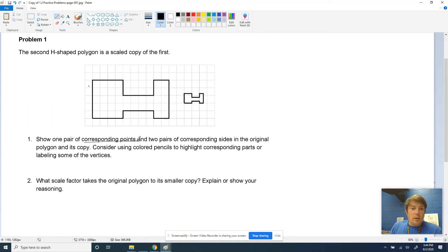We've talked about corresponding points. We've talked about corresponding sides, which are parts, sides, points. We could also talk about angles. But the first thing that it wants us to do is to show a pair of corresponding points. Now, it says you could use colored pencils if you want. Highlight, that's fine. I'm just going to pick a couple of points and give them a letter name.